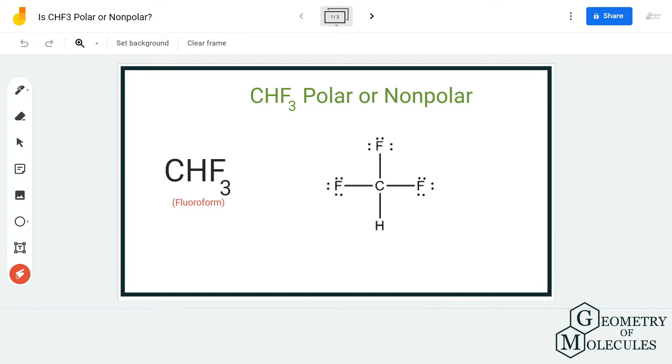Here is the Lewis structure of CHF3, in which the carbon atom is in the center. There are three fluorine atoms and one hydrogen atom. To understand the polarity, we should also consider the electronegativities of the atoms that are involved in the structure.